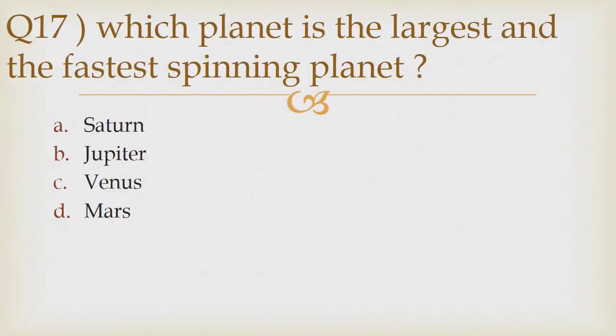Question 17: Which planet is the largest and the fastest spinning planet? Option A Saturn, option B Jupiter, option C Venus, option D Mars. The correct answer is option B Jupiter.